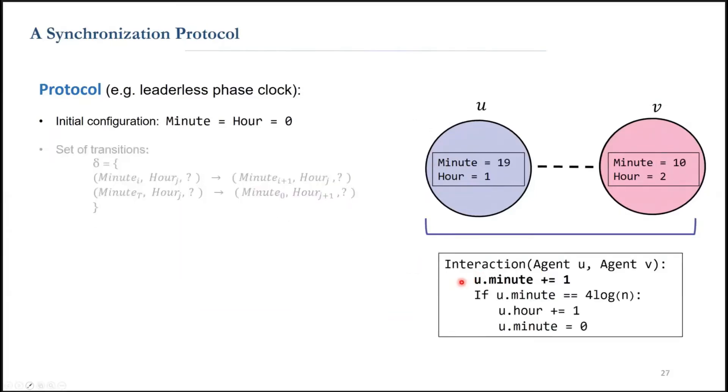What are they doing with these fields? On every interaction, one of the agents increments its minute. The agents increment the minute up to 4 log n, and then when it gets there, they increment the hour and set the minute back to zero.